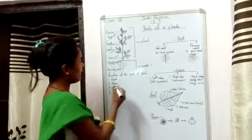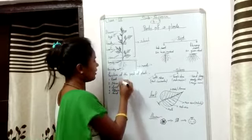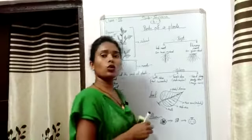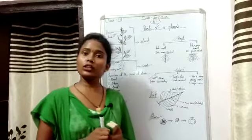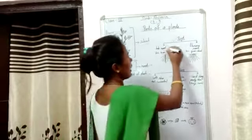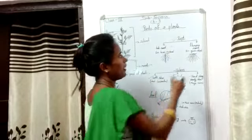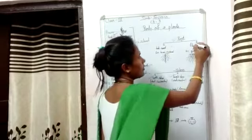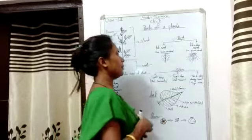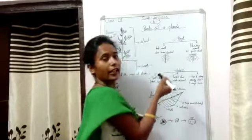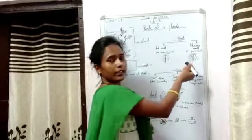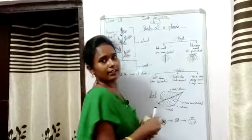First: Root. Roots are of two types — the first type is tap root and the second type is fibrous root. For tap root, examples are bean and mustard. For fibrous root, examples are grass and wheat.